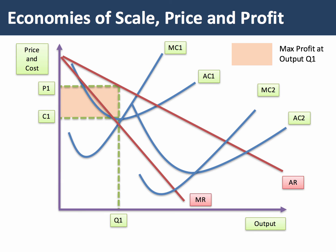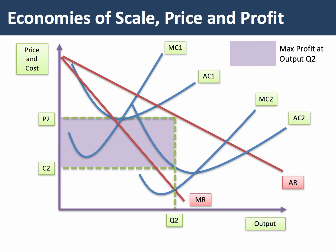Just to show this — that's the profit at Q1 compared with the profit at Q2. So economies of scale has led to a fall in consumer price, good news for consumer surplus, and an increase in total profit, good news for producer surplus. In other words, with economies of scale, there's been an improvement in economic welfare and efficiency.